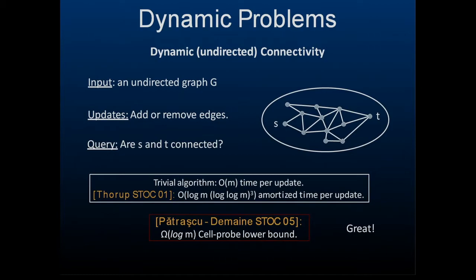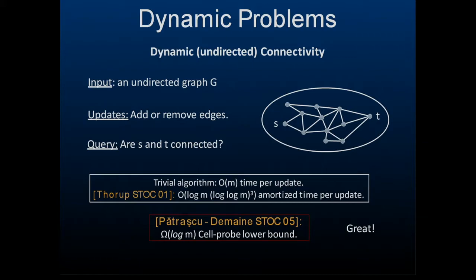One interesting dynamic problem: your input is a graph, updates are added and removed edges, and the query is whether two fixed vertices S and T are connected in the current graph. The trivial update time is order M. One of the big successes of dynamic algorithms is showing you can do polylogarithmic — roughly log M — time per update. There's also a cell probe lower bound by Patrascu and Demaine showing log M is necessary.